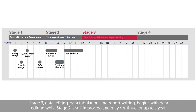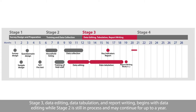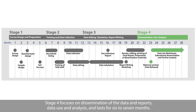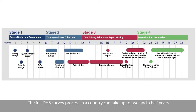Stage 3, Data Editing, Data Tabulation and Report Writing, begins with data editing while Stage 2 is still in process and may continue for up to a year. Stage 4 focuses on dissemination of the data and reports, data use and analysis, and lasts for six to seven months. The full DHS survey process in a country can take up to two and a half years.